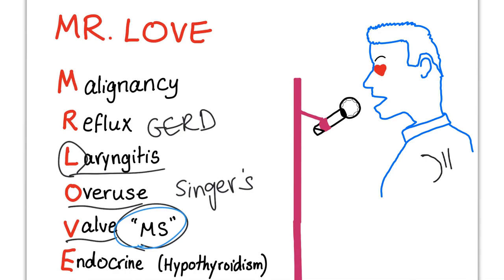When it enlarges, it presses on the structure behind it, causing hoarseness of voice. What is the structure behind it? Correct, the recurrent laryngeal nerve.